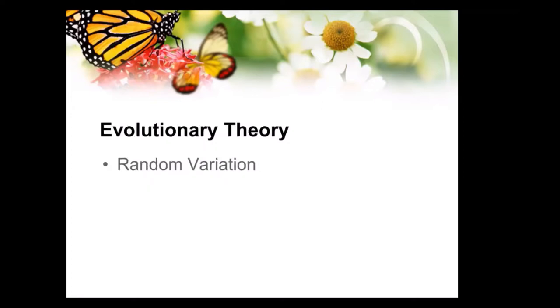The different pieces of evolutionary theory include random variation, and I think most people understand that — I personally fully accept it. If you had a litter of puppies, they're not identical. There's one that's taller, one with a longer body, maybe different coloring. I accept random variation. That's what Gregor Mendel observed and it went into his studies of genetics.